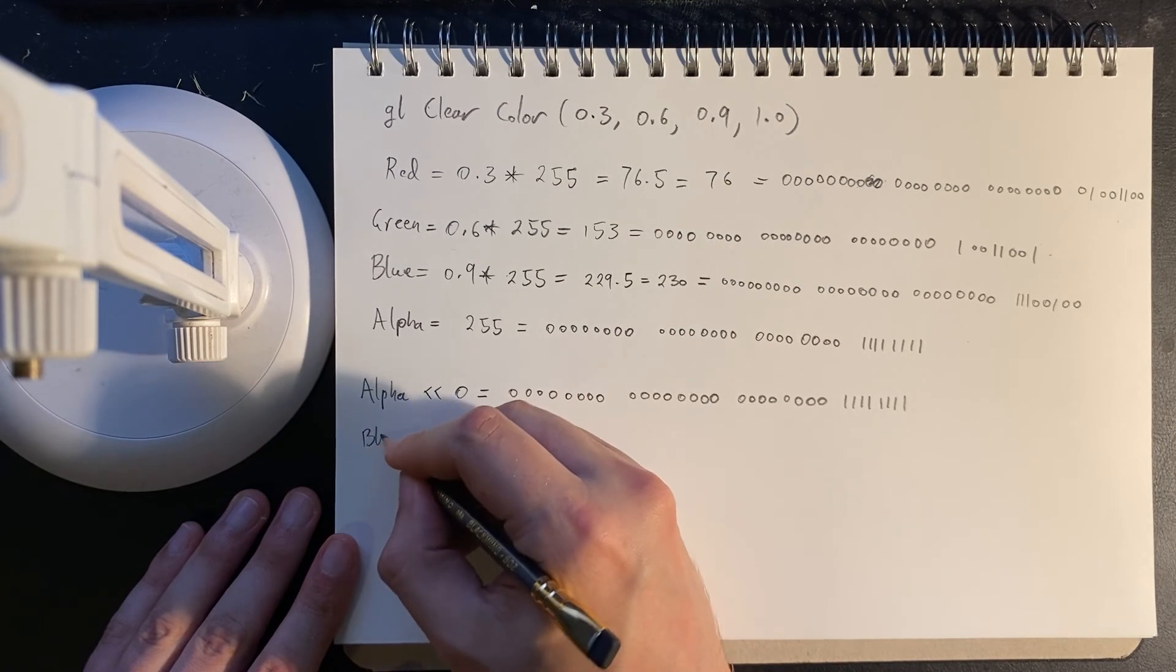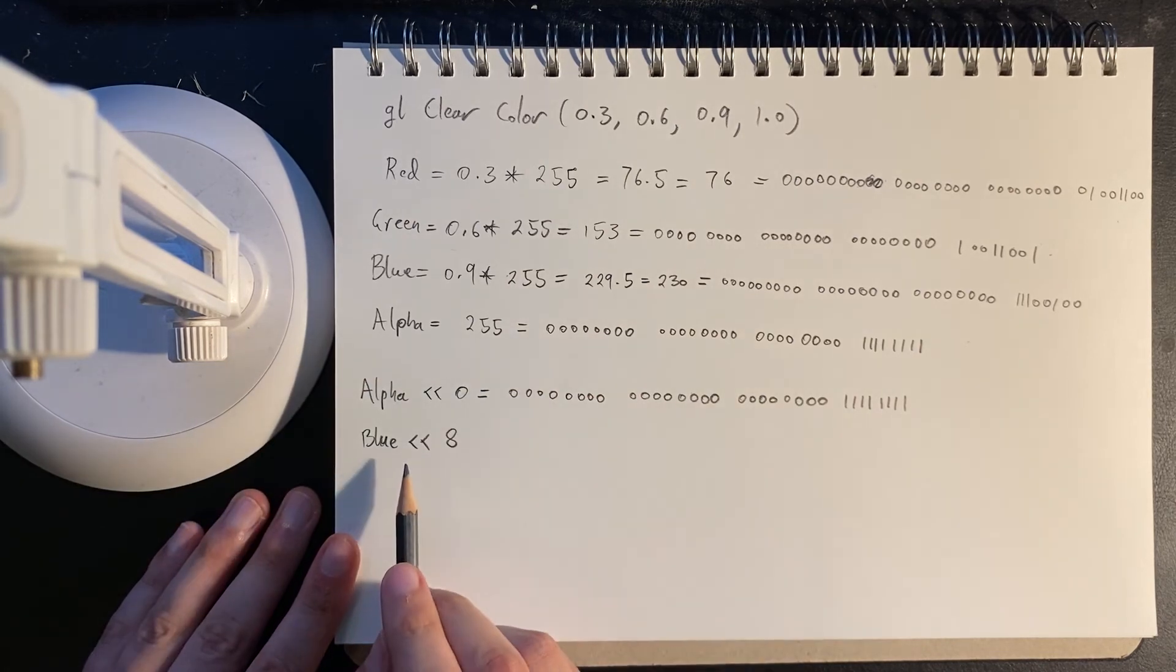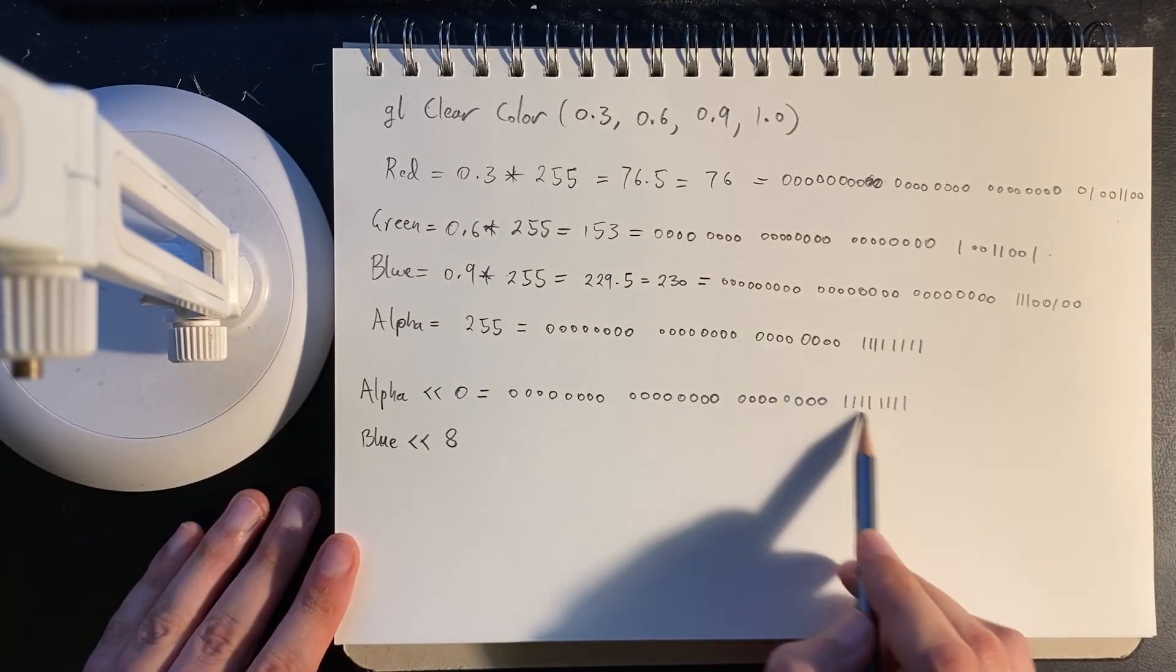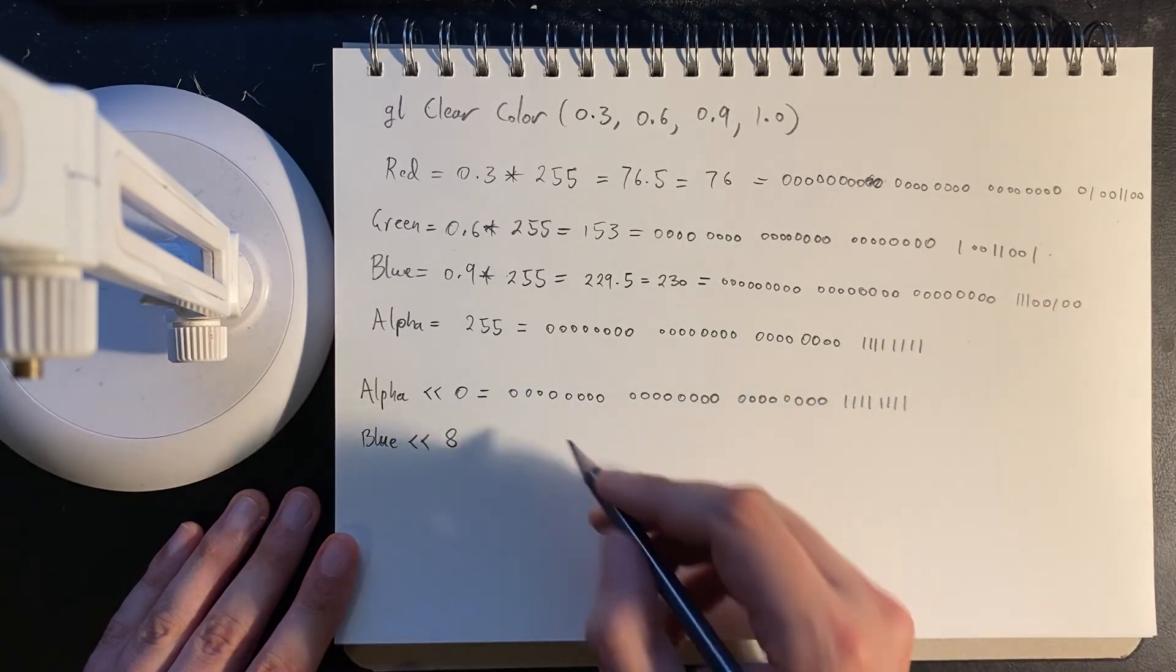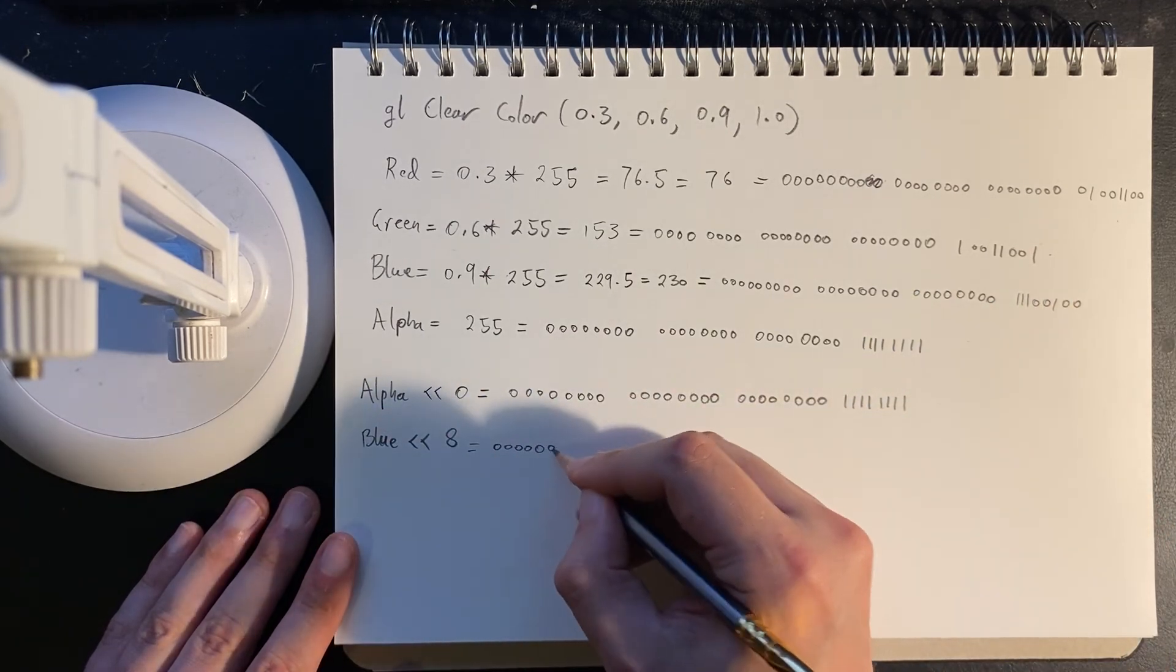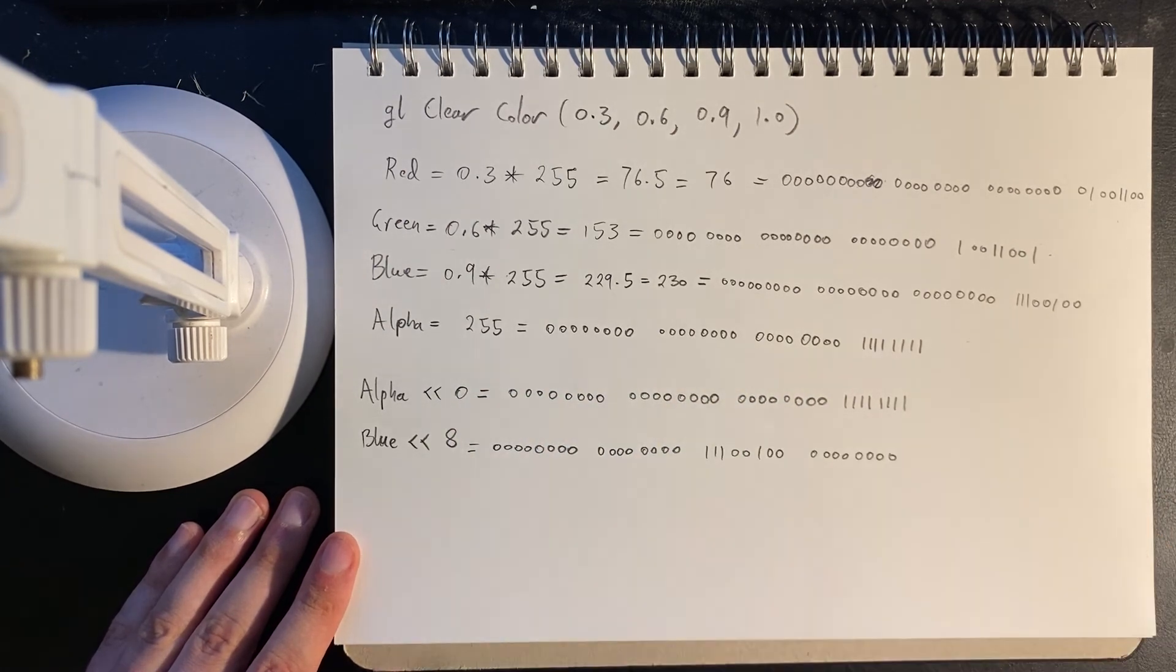Then we'll take the blue. And we'll shift it eight bits to the left, because these eight bits are being used. So the blue information gets shifted up.